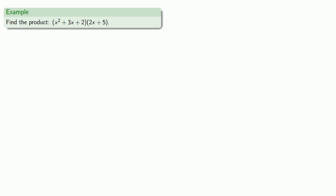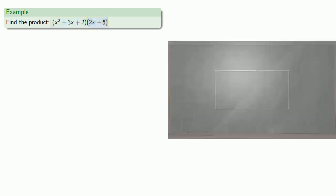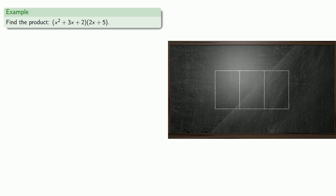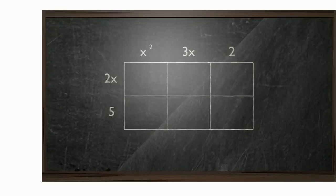So here, my first factor has three terms, and my second factor has two terms. So I'll break one side of the rectangle into three parts and split the other side into two, so each part corresponds to one term in the factor. So here my width is going to be x squared, 3x, and 2, and my height is going to be 2x and 5. And now I can find the areas of each of these six rectangles.